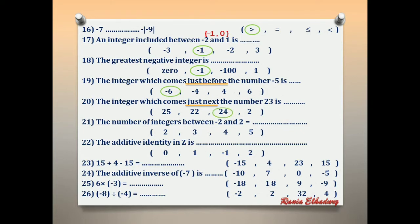Number 21: the number of integers between negative 2 and 2. The integers between are negative 1, 0, and 1. That is 3 numbers.